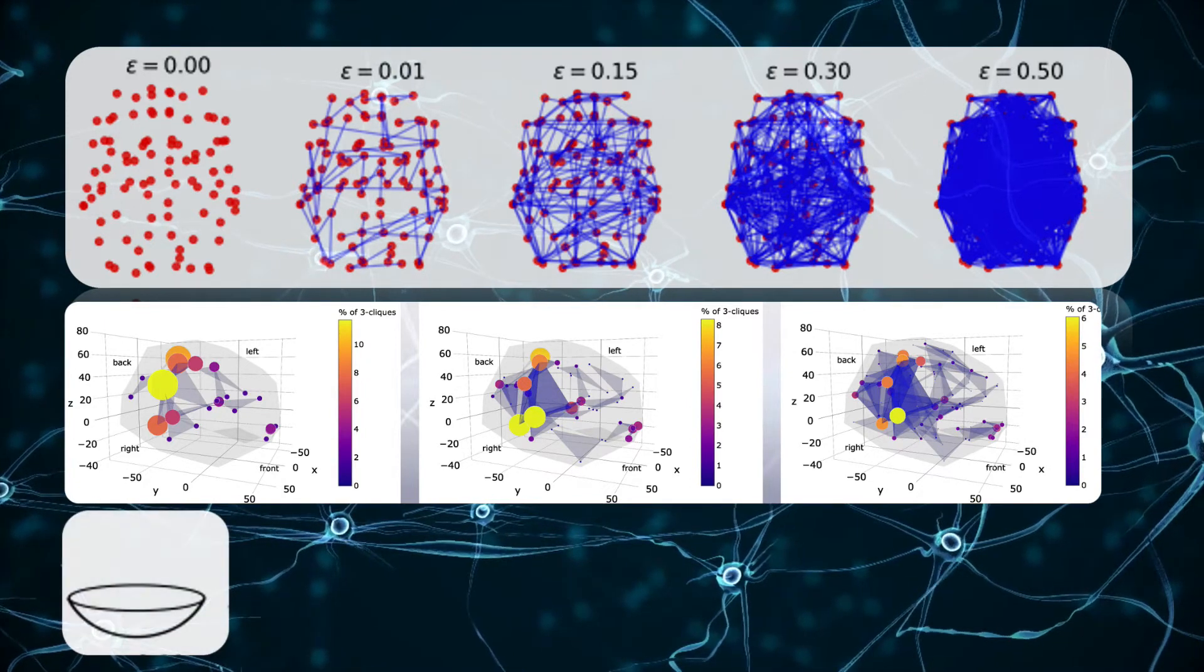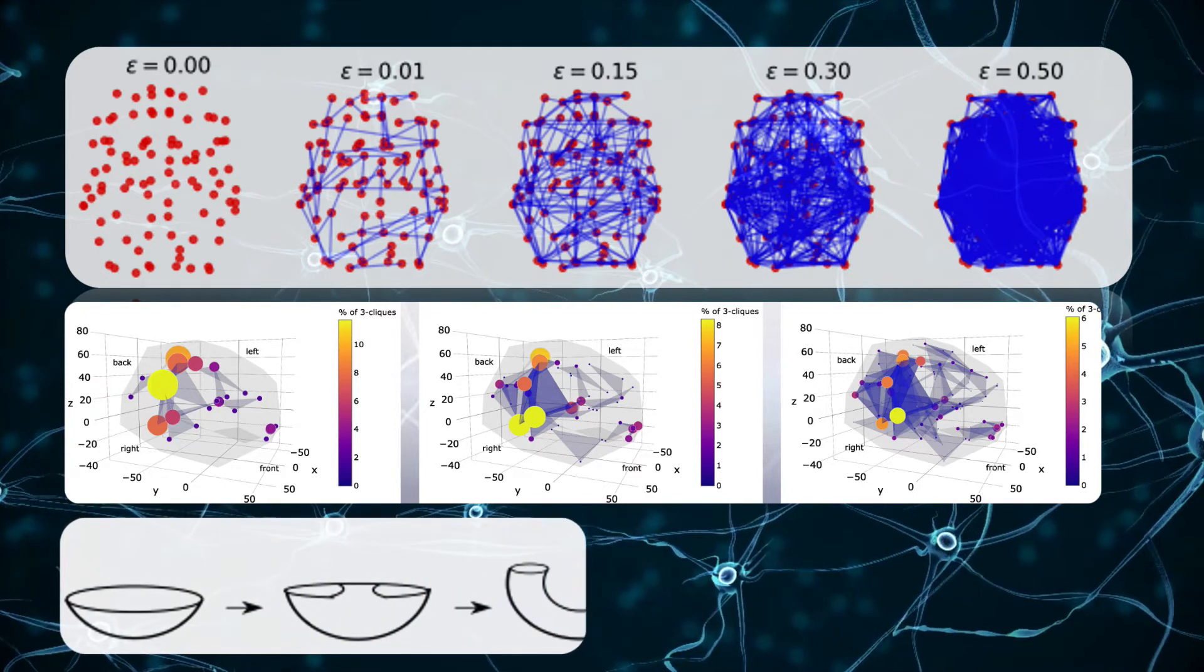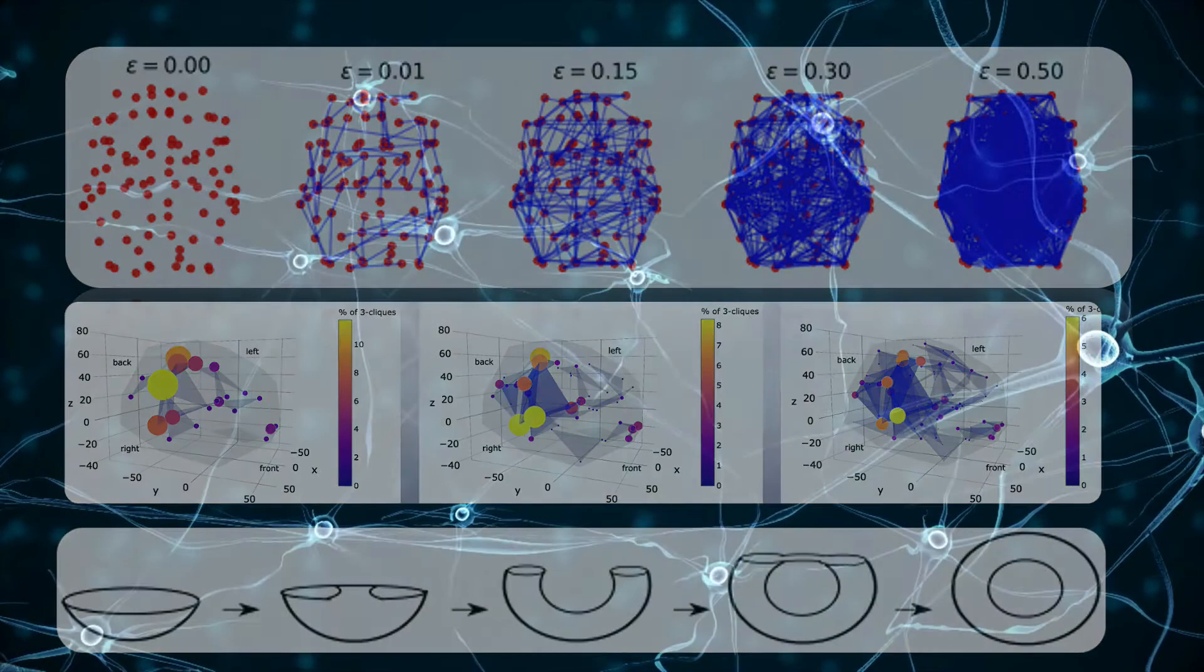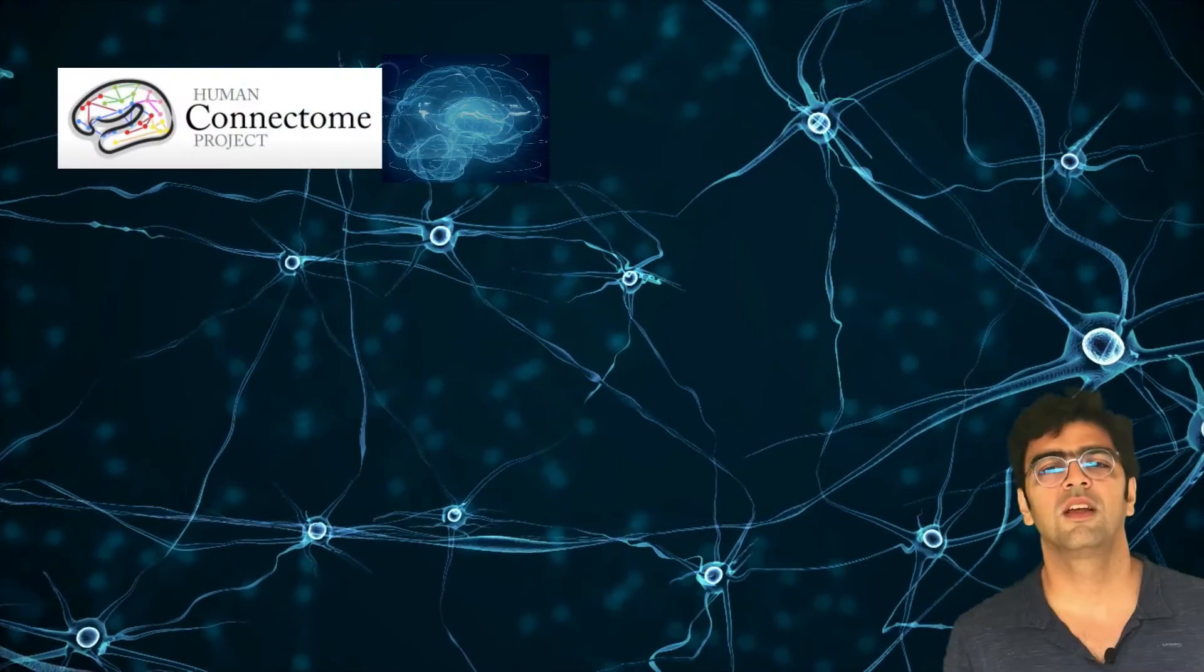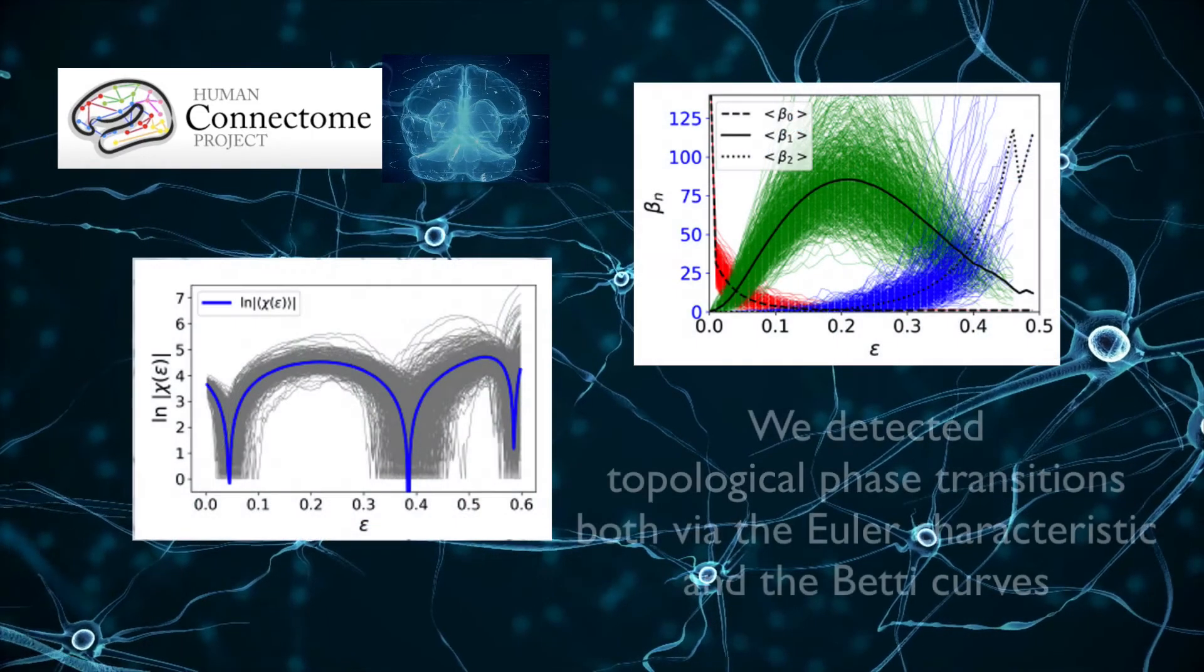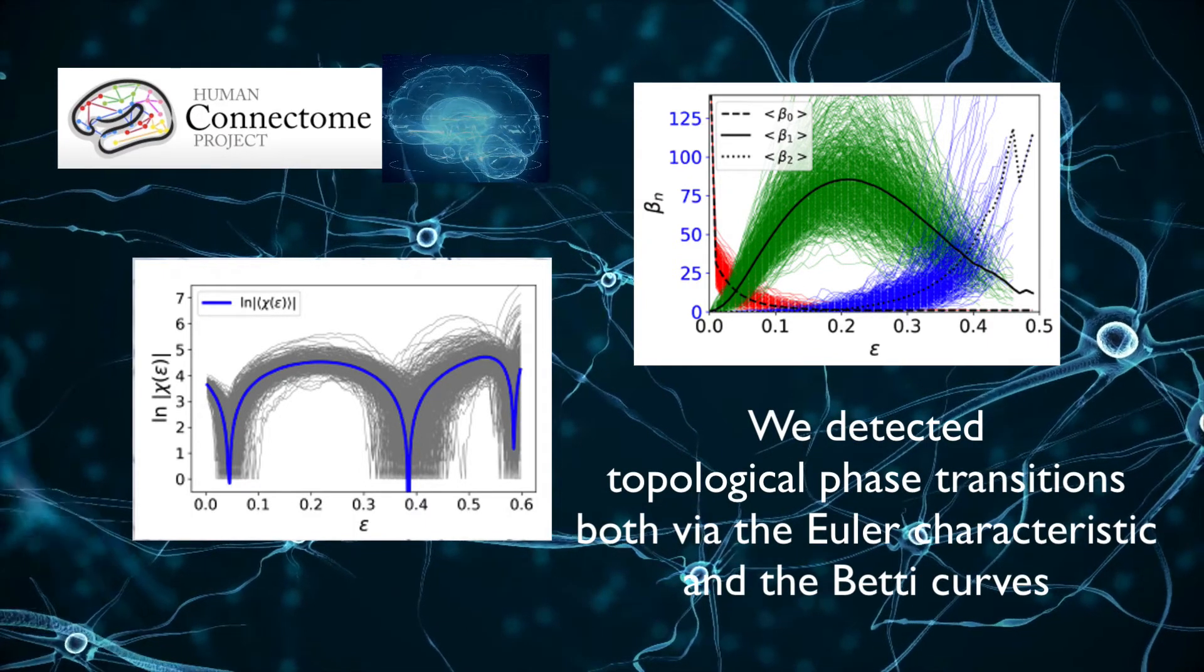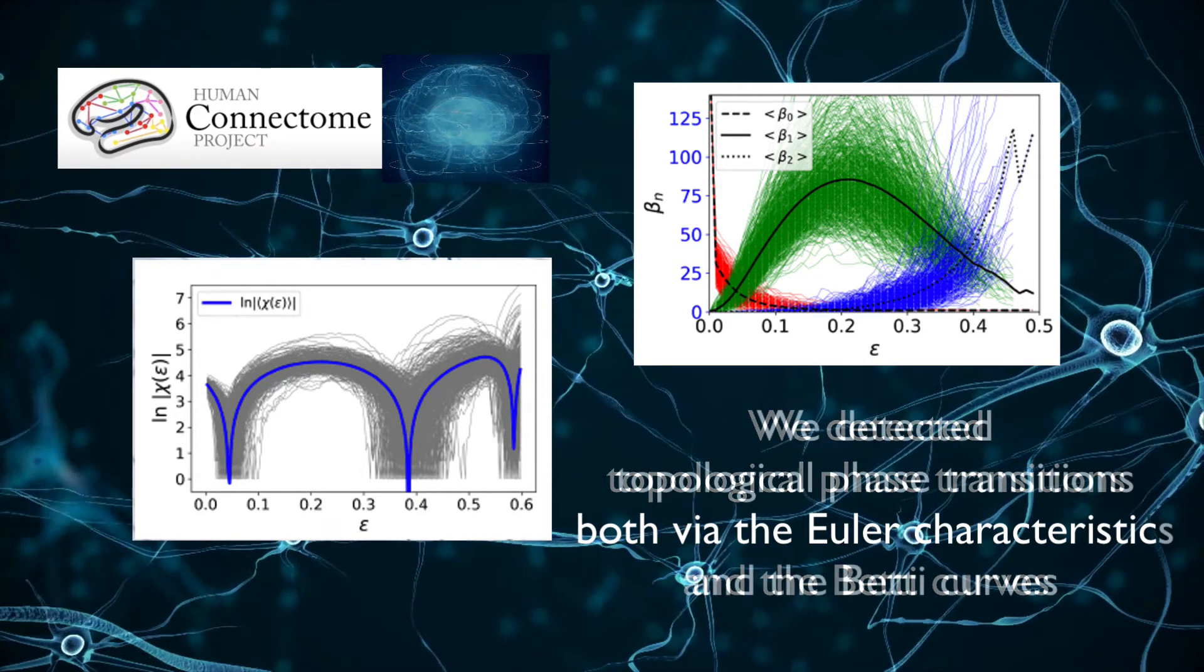In contrast, in theoretical physics, we track topological changes and phase transitions by studying the level sets of a Hamiltonian as a function of energy, as illustrated here for the torus. We first analyzed the human connectome database. We computed both the Euler characteristic and the Betti curves for a large database of functional brain networks from the human connectome project, and we were able to detect topological phase transitions in those networks.